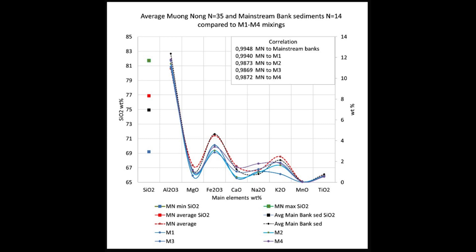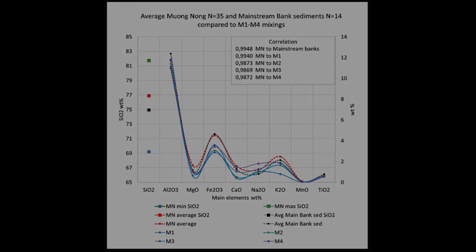It has been proposed that Southeast Asian tektites were created by post-Archean sediments indicative of Jurassic sedimentary rocks, aged around 167 million years old. Four different mixings were proposed, all of which correlate at very high values to mainstream bank sediments.